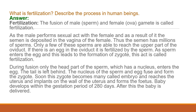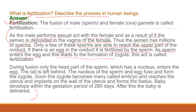The next question is: what is fertilization, and describe the process of fertilization in humans. As the male performs the sexual act with the female, semen is deposited in the vagina. The semen has millions of sperms, and only a few are able to reach the upper part of the oviduct. If there is an egg in the oviduct, it is fertilized by the sperm — as the sperm enters the egg, this leads to the formation of a zygote, and this act is called fertilization. During fusion, only the head part of the sperm, which has a nucleus, enters the egg; the tail is left behind, and the nuclei of the sperm and egg fuse together to form a zygote.